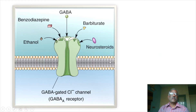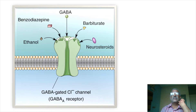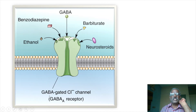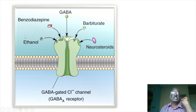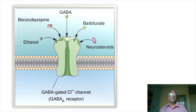For example, there is a GABA receptor. You can add drugs at one receptor at multiple sites of action. You can add ethanol, benzodiazepine, barbiturates, and neurosteroids. If you activate a GABA receptor, you can open a chloride channel.